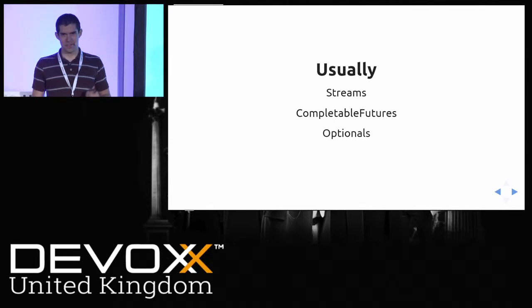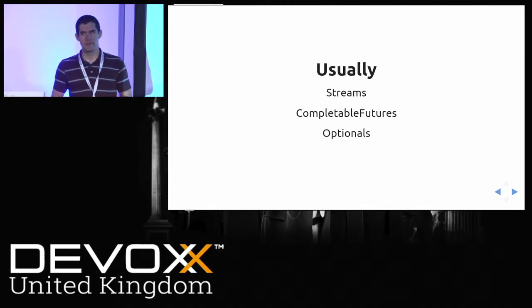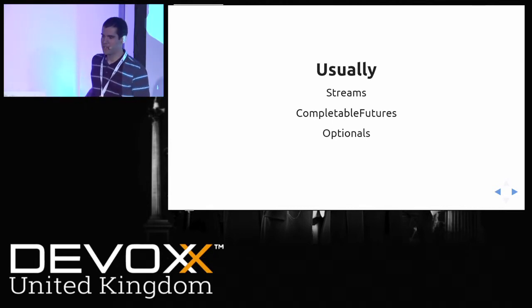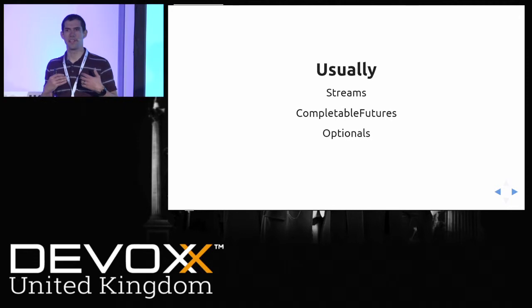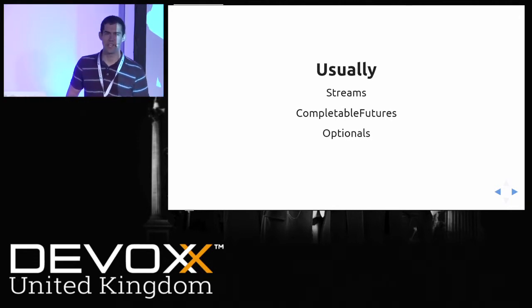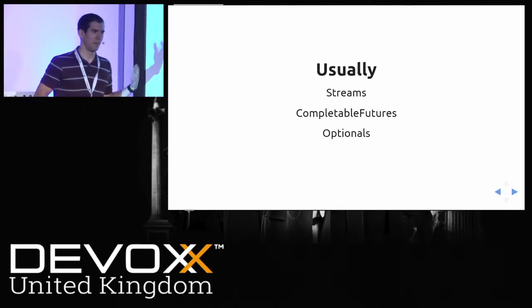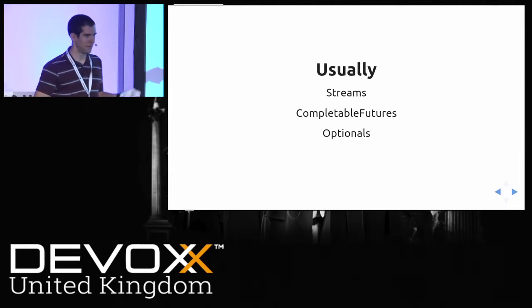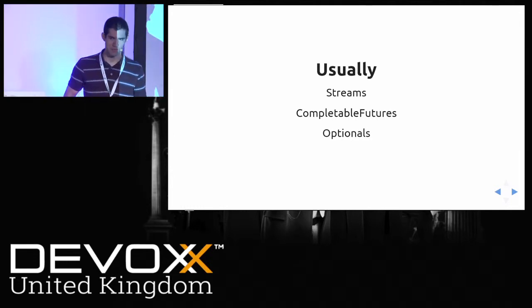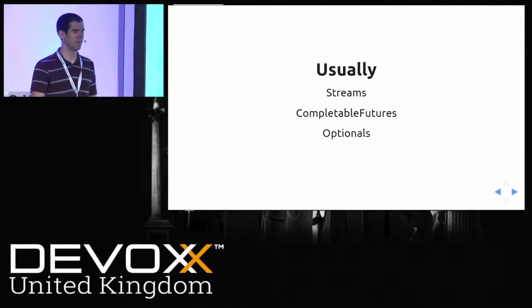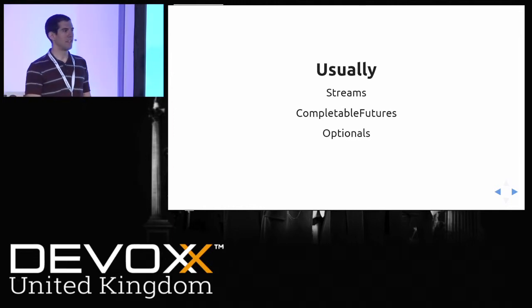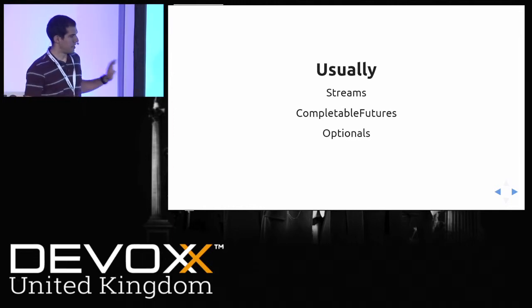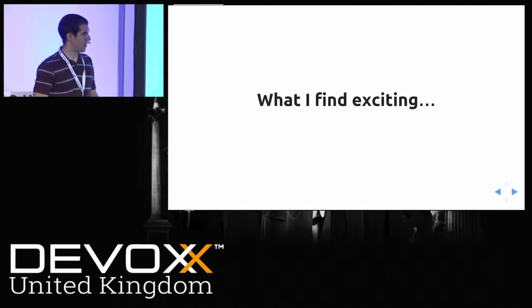Most Java 8 talks I've been to have been about the new language features and how they help us do commonly-done things more easily — often looking at the streams API, completable futures, optionals, combined with lambdas and method references. That's not what I'm going to talk about.